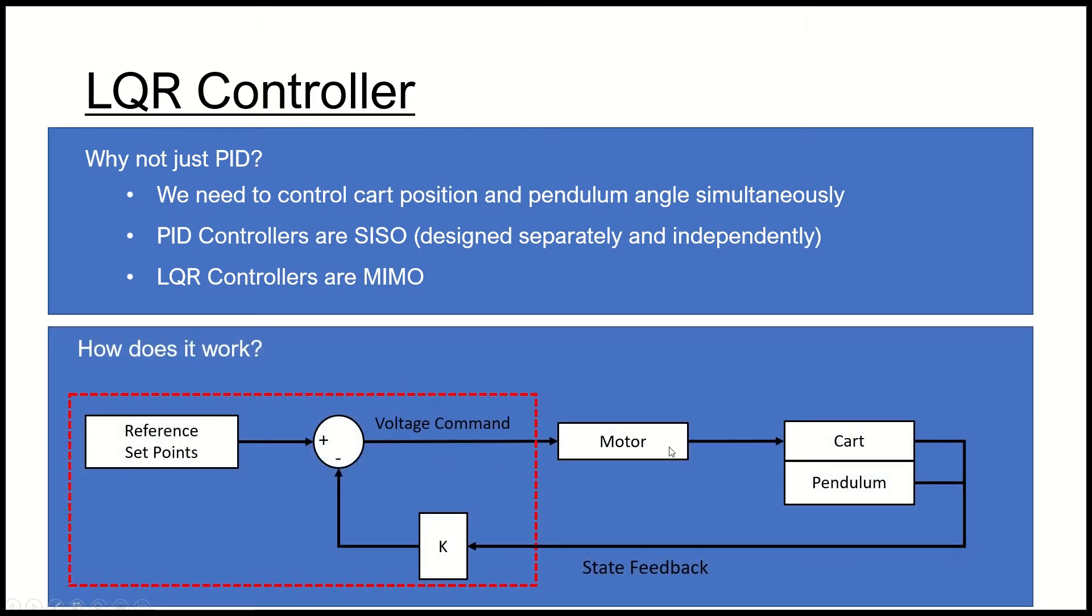How it looks is effectively it relies on full state feedback, which is all the states that we spoke about earlier: x the position of the cart, x dot, and then we have theta of the pendulum angle, and then we have theta dot which is the pendulum angular velocity. Those four states we're basically feeding back through a gain factor k. It's a matrix multiplication, so basically this k is a one by four matrix and we're multiplying it by a four by one matrix of the states which will then give us a one by one matrix or just a constant value which we can then feed into this summing block.